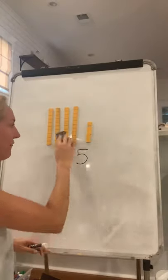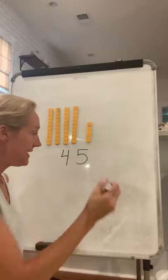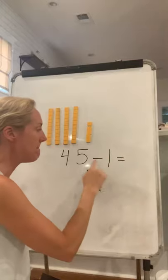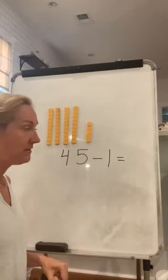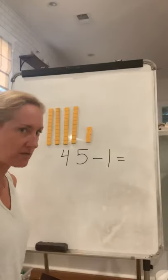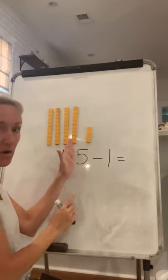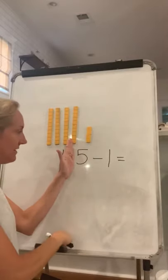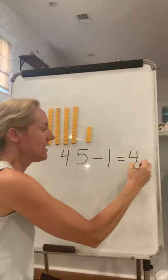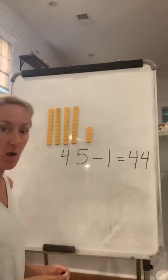What if I have 45 and I want to take away one — minus one? Let's take one away. So now I don't have 45 because I don't have five ones anymore. I'm looking at my ones — I took one away. So now I have 44. I have 44 because I took one away.